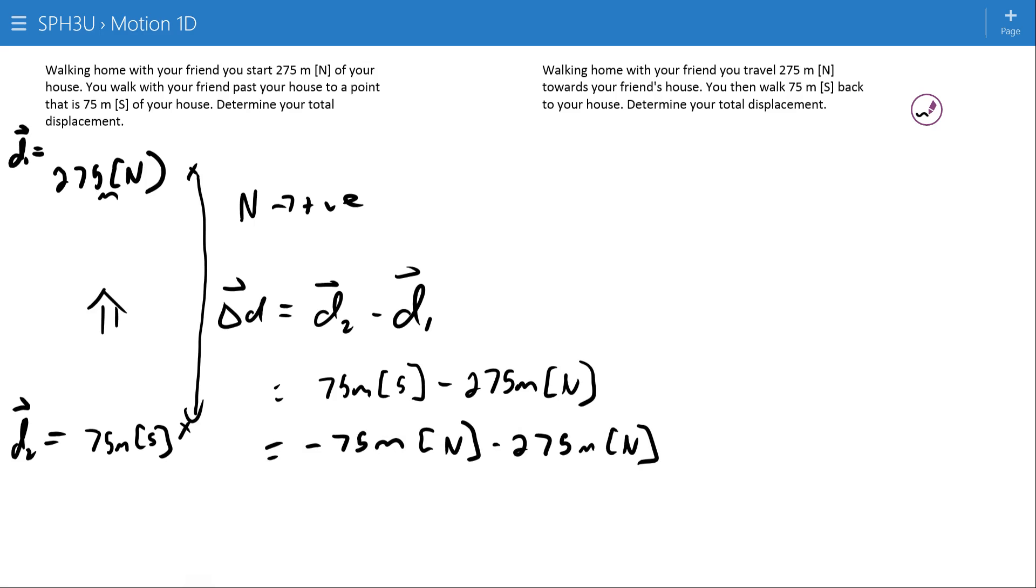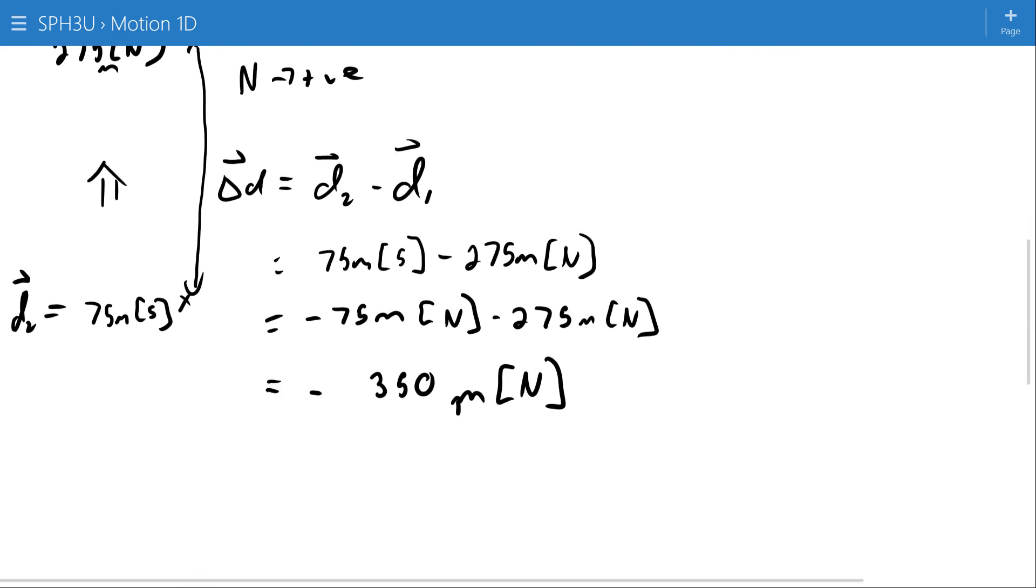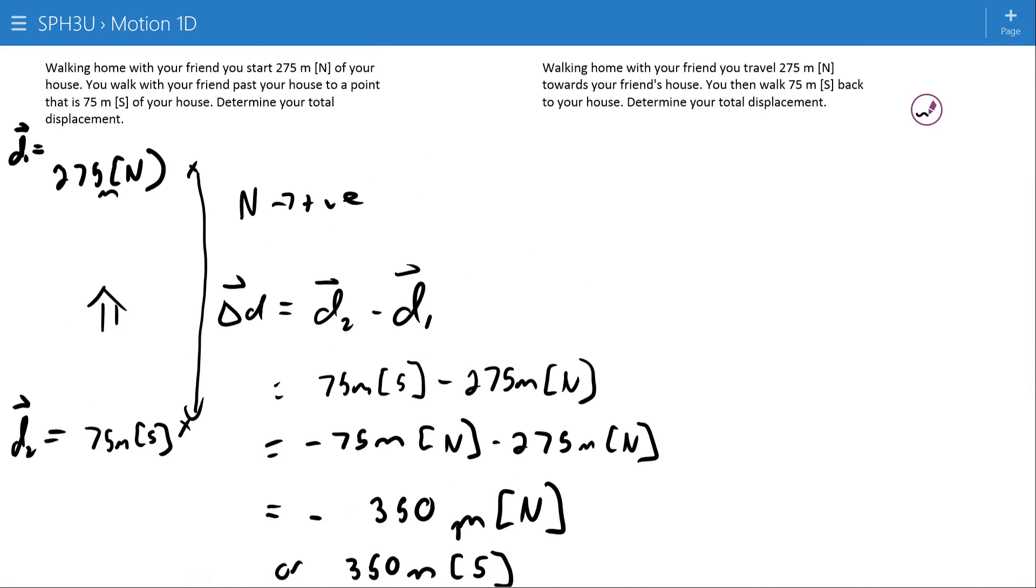And as a result, your total displacement here is negative 350 meters north or 350 meters south. I think we can see that here, we went this far plus this far to get all the way down, so that's the 350 meters south.